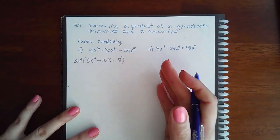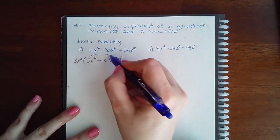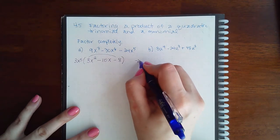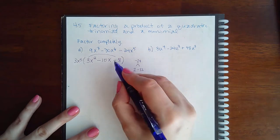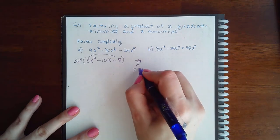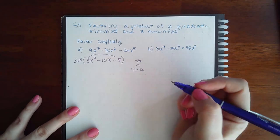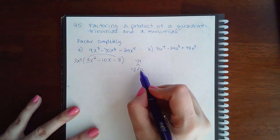So 3 times negative 8 is negative 24, and then 2 times 12 will subtract to give me 10. The bigger number has to be negative so the smaller number is positive. Those multiply to give me negative 24, but when I do 2 minus 12 I get negative 10.